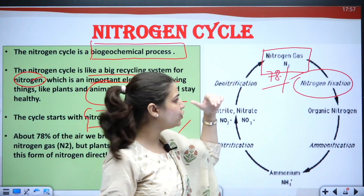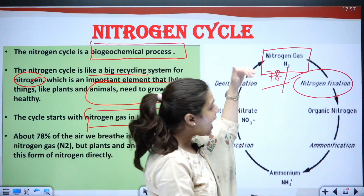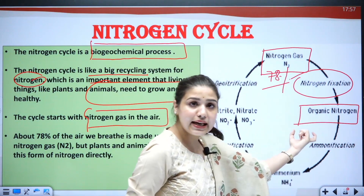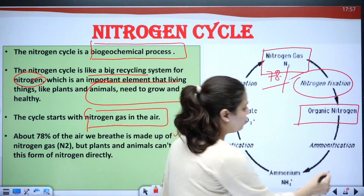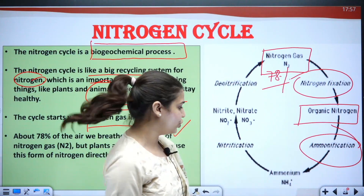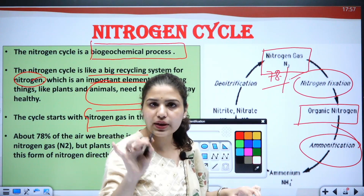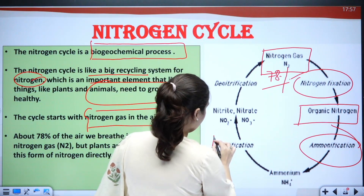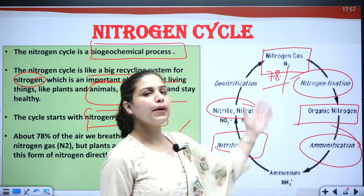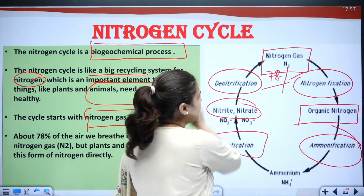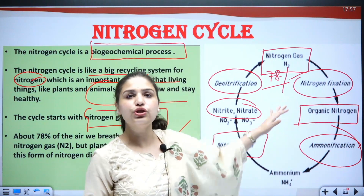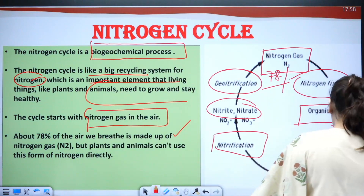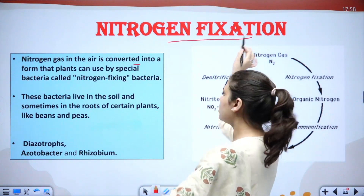Looking at the diagram: nitrogen gas is present in the atmosphere at around 78 percent. This nitrogen gas cannot be used in this form — it needs to be converted through nitrogen fixation. It is then converted into organic nitrogen, which through ammonification becomes ammonia, then through nitrification becomes nitrites or nitrates, and finally through denitrification is converted back into nitrogen gas.